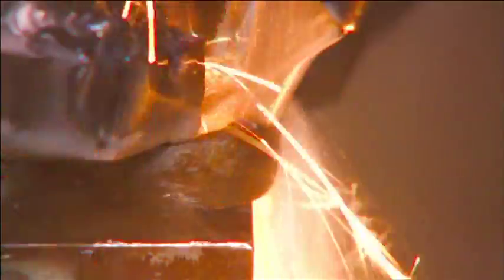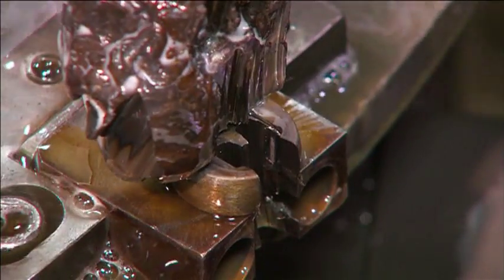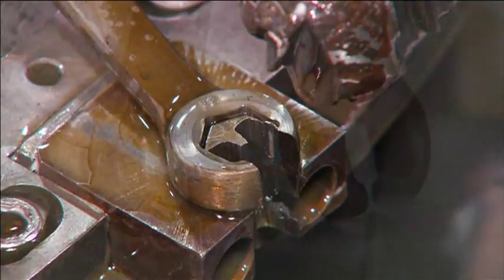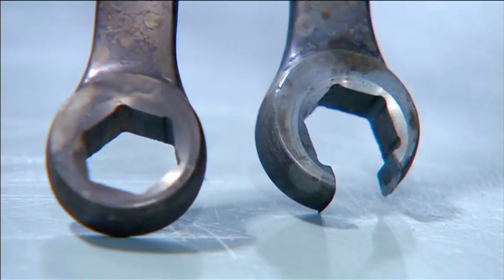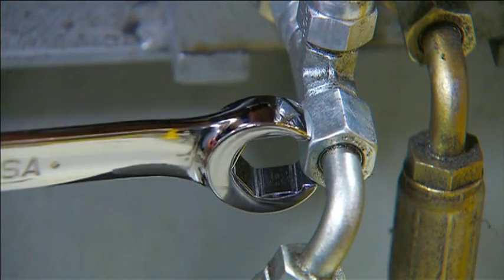For some combination wrenches, a slotting machine cuts an opening out of the box end that has the hex shape broached into it. This turns the wrench into a flare-nut wrench that's ideal for working on hard-to-reach bolts, like on a hydraulic line.